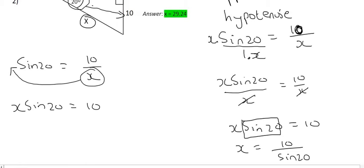And then to get x alone, you had to take this sin 20 and you had to divide on the other side. So it went to the bottom. And so if you had to go type that all in on the calculator, you're going to end up with a value of 29.24 as your x value.